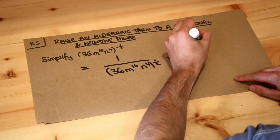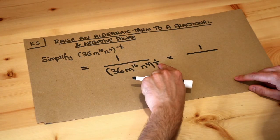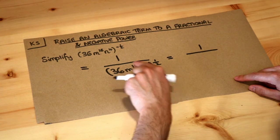And then how do we deal with the power of a half? Well, we just apply the power of half to each of these things in the term.